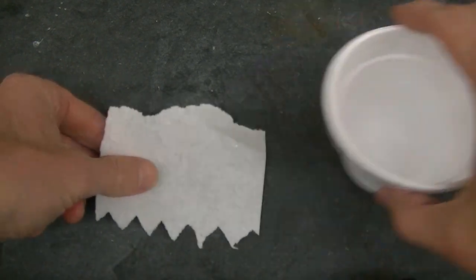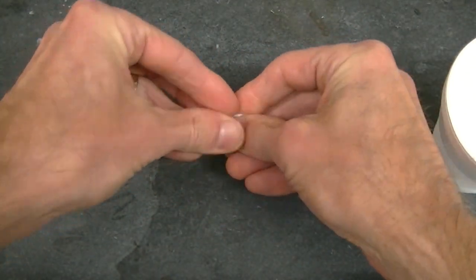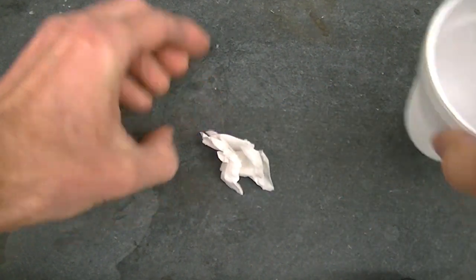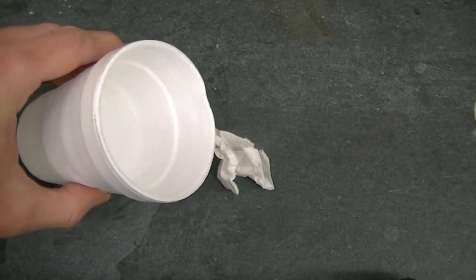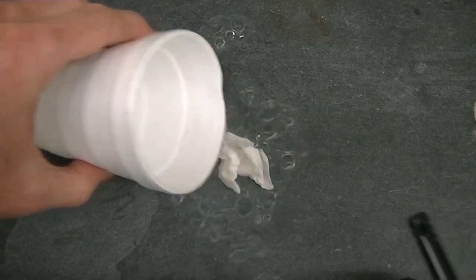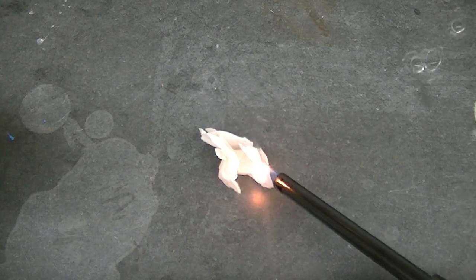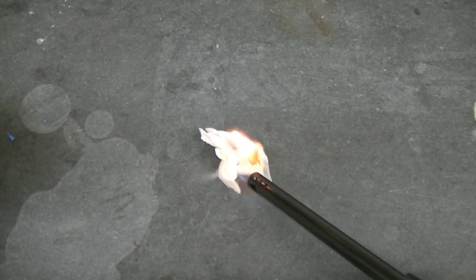I'll take this paper towel, which is a combustible material. Fold it up a little bit. Pour some liquid nitrogen on top. Then I'll take this butane lighter and light it up. Do you notice those white clouds? That's like butane condensation. Doesn't seem to want to light.